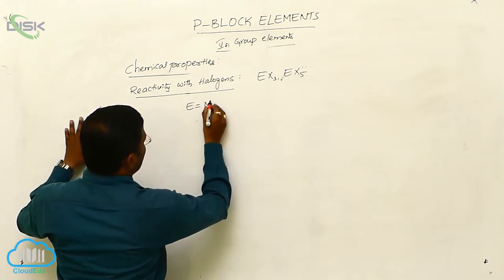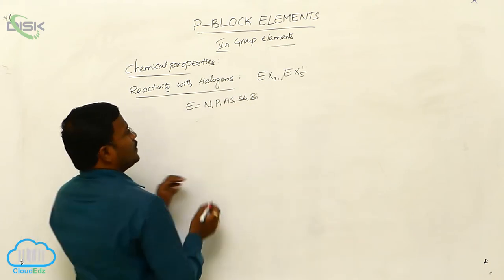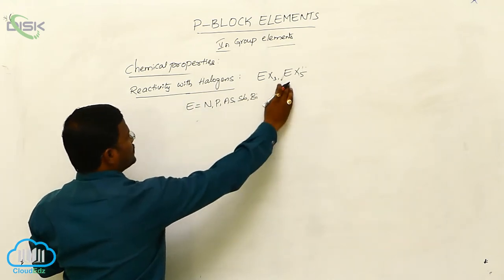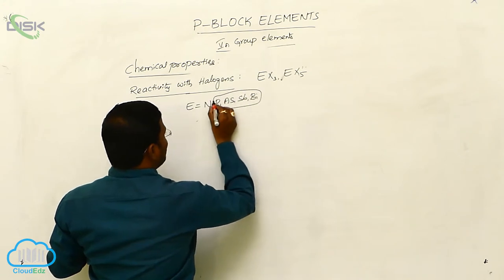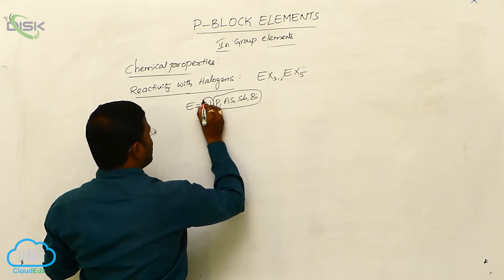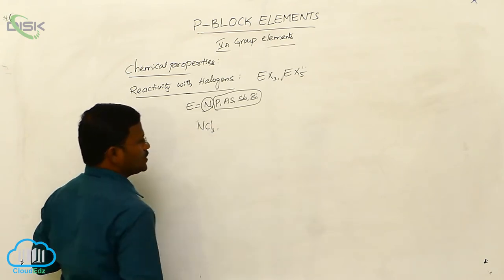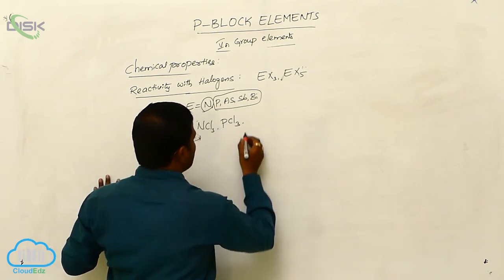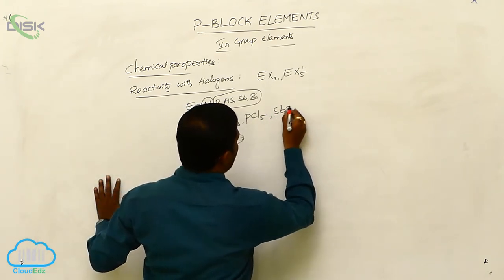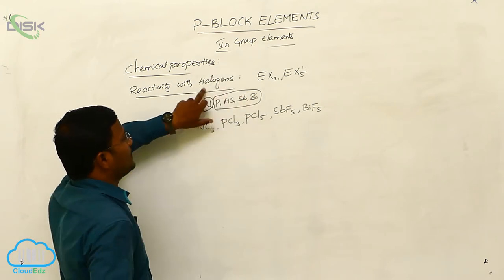Where E equals any Group 5A element: nitrogen, phosphorus, arsenic, antimony, bismuth. In the EX3 formula the oxidation state is +3, and in EX5 it is +5. Only EX5 type of halides are produced from phosphorus, arsenic, stibium, and bismuth. EX3 type of halides are produced from nitrogen, phosphorus, and the remaining elements. For example, NCl3 is a rarely identified nitrogen trichloride, whereas well-known chlorides of phosphorus are PCl3 (phosphorus trichloride) and PCl5 (phosphorus pentachloride).